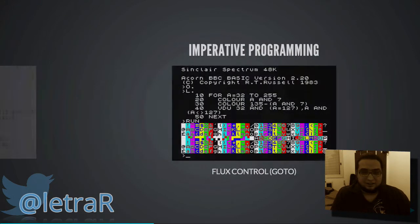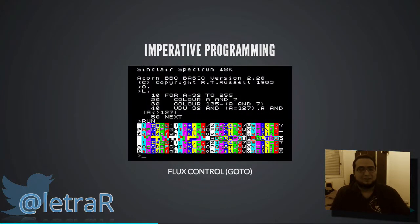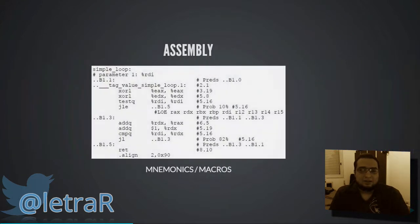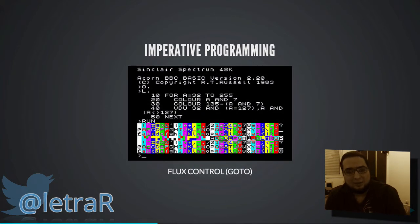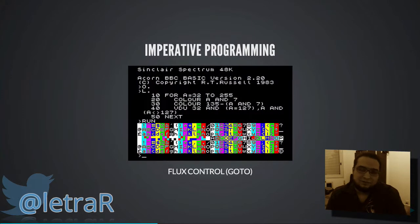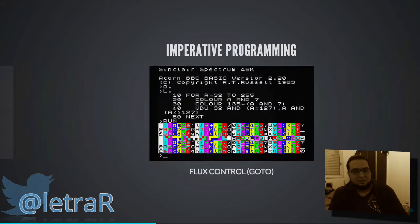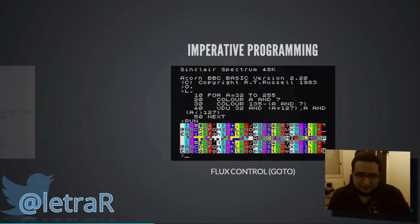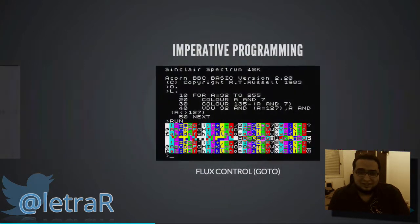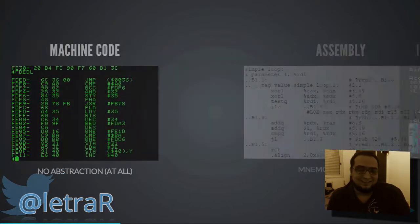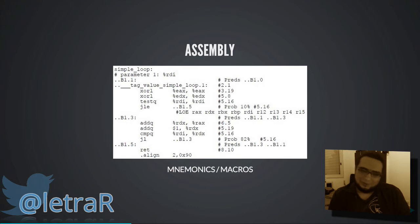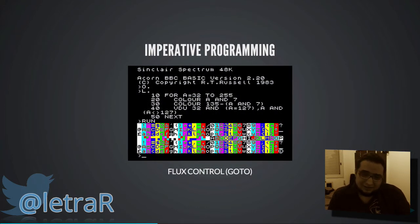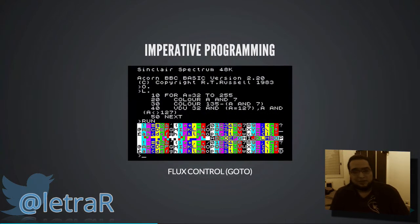Comparado com código de máquina, era extremamente mais fácil e simples. Mas quando a programação imperativa começou a se popularizar, a galera do assembly falou: 'isso não é programação, que negócio ridículo, isso é fácil, você não sabe o que está acontecendo de verdade, você não controla a máquina, isso é palhaçada.' Deu muita briga mais uma vez — quem programava em código de máquina achava que o pessoal do assembly não programava, e o pessoal do assembly achava que a programação imperativa era o lixo.